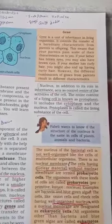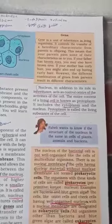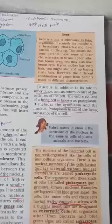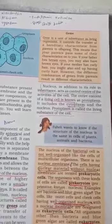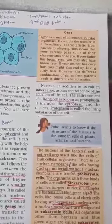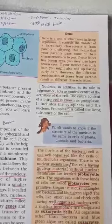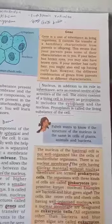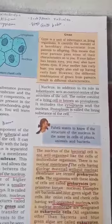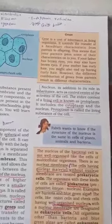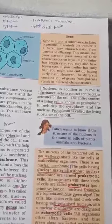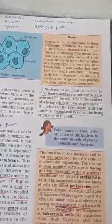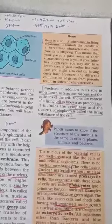The entire content of living cells is known as the protoplasm. It includes the cytoplasm and the nucleus. Protoplasm is called the living substance of the cell.